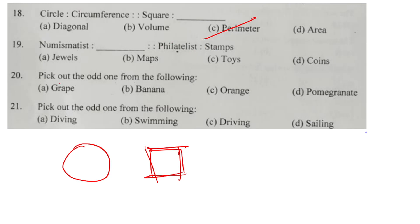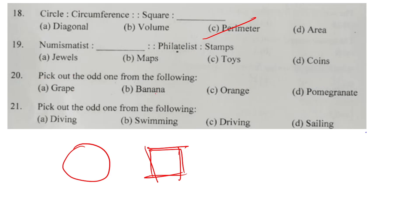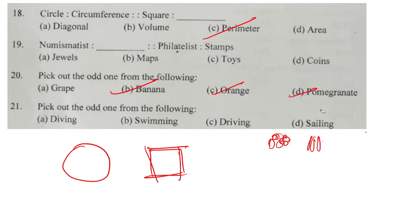Question number 20: grape, banana, orange, palm — find the relation. Banana, orange, and a journal item — granita has 23 more than the others. The answer will be the correct option.